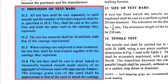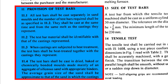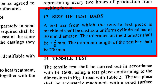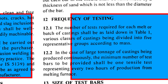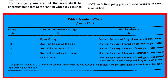Grey cast iron, being a versatile material, can be molded into any design and size. However, in the testing laboratory, due to space constraints, test bars of sizes as mentioned in Clause 13 of IS-210 are supplied for carrying out the tests. These test bars are cast at the same time and from the same melt as the castings they represent. Grey cast iron casting is a continuous process, making it impractical to conduct tests on every production run; therefore, the testing frequency is defined as per Table 1 of IS-210, which specifies the number of tests required for each melt or batch of castings.